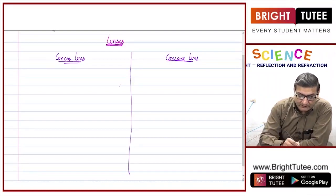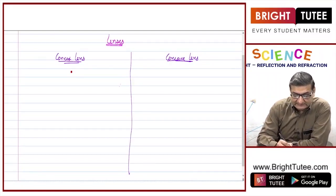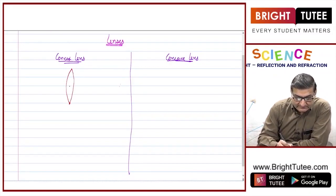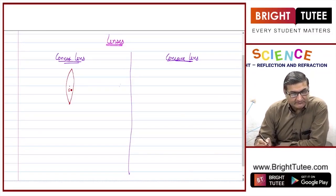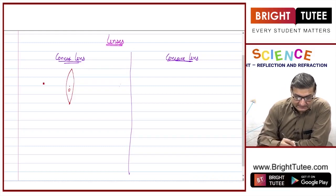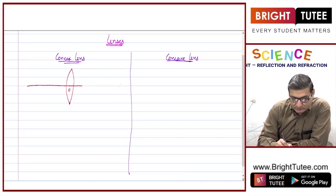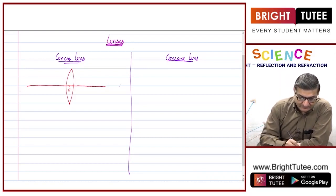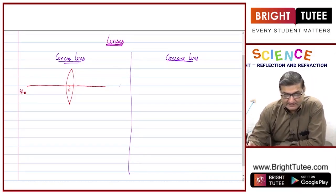When I am talking about the convex lens, this is a kind of convex lens. This is the middle, that is the optical center of this lens. This is the principal axis going through and joining the midpoint of the lens. Let us mark it PA — principal axis.